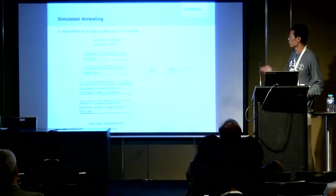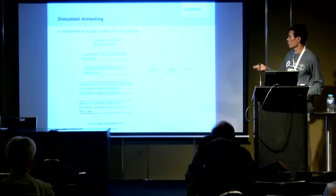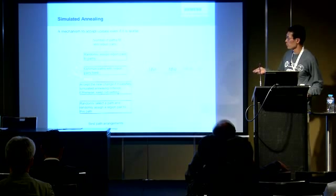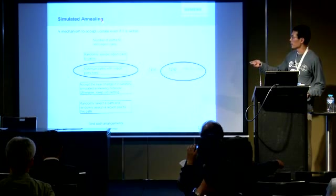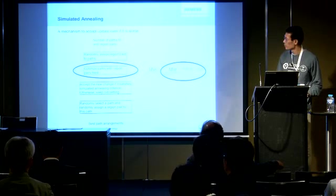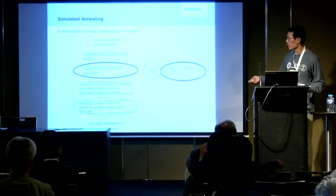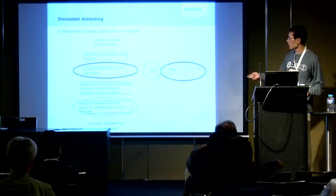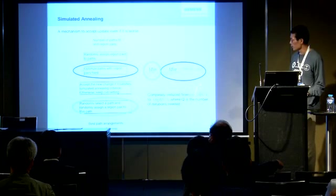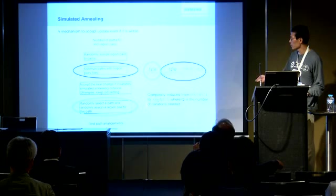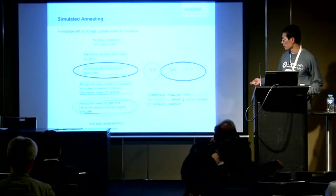Here is the workflow of the optimization. We are given a number of paths to use and all constraint region pairs. First, we randomly assign region pairs for the paths, then fix those region pairs and optimize parameters using gradient descent. We apply the simulated annealing criterion to see if we can accept the update, then randomly perturb our setup by randomly selecting a path and assigning a new region pair to it. After the algorithm converges, we output the best path arrangement. The complexity drops from the exponential term to a polynomial term — the exponential is replaced by a constant Q, which is the total number of iterations, greatly reducing complexity.